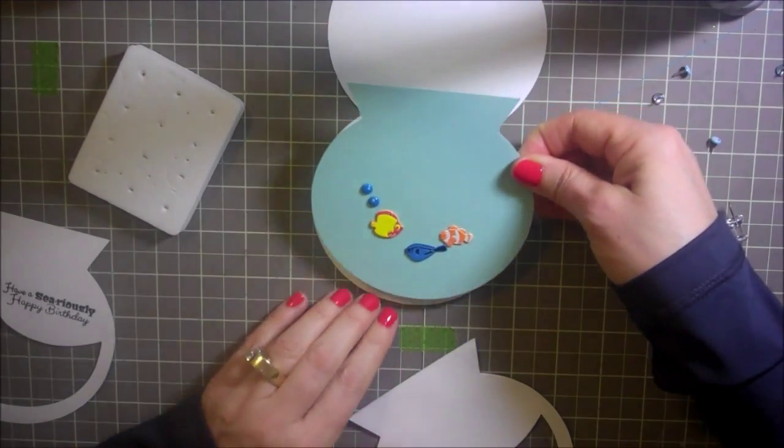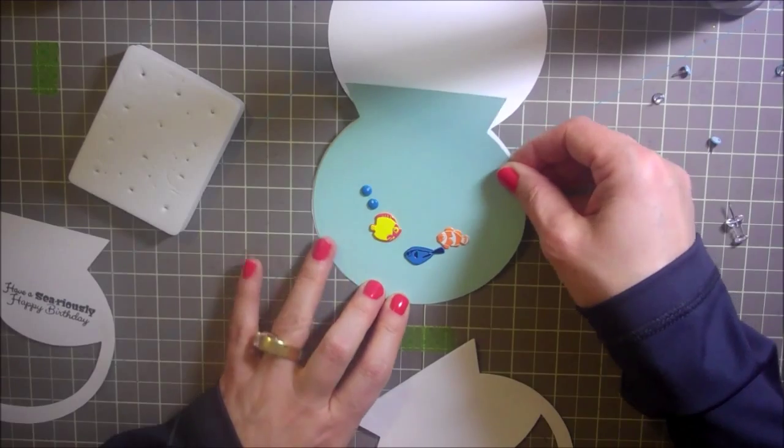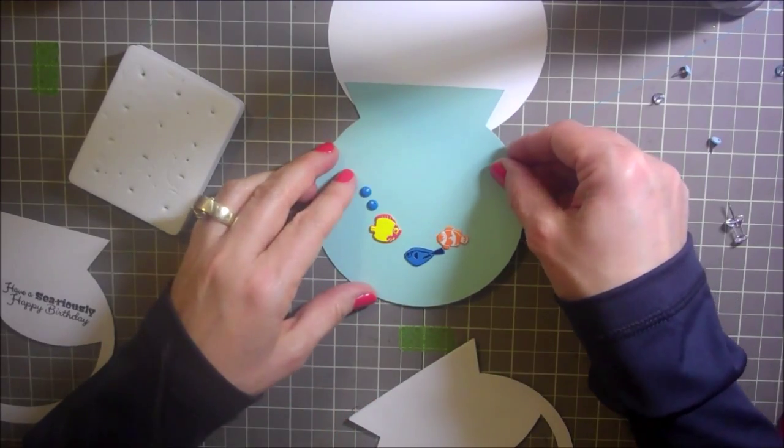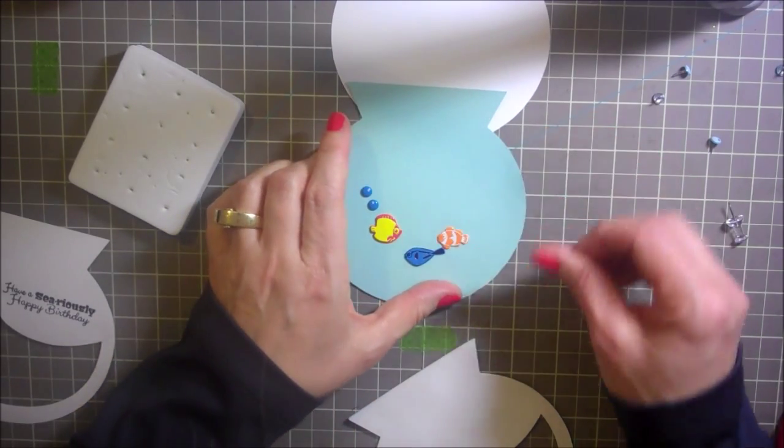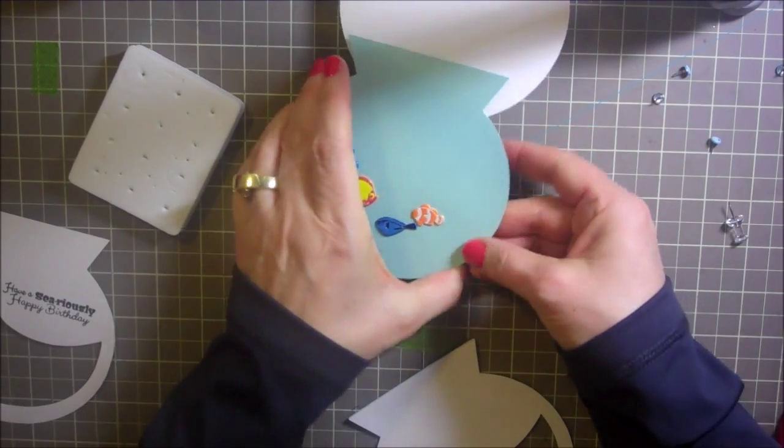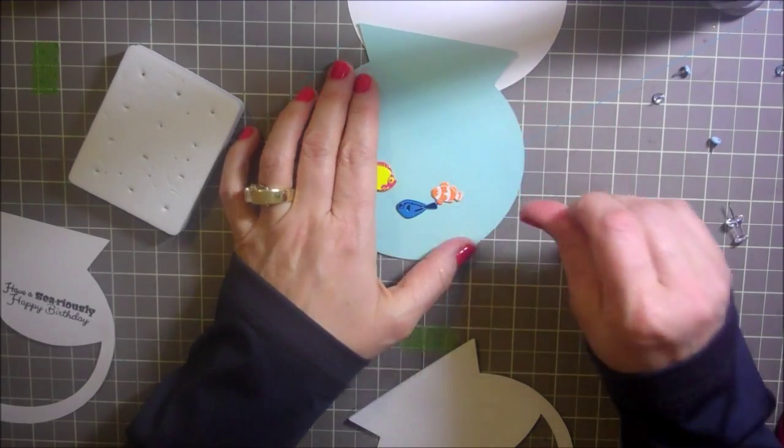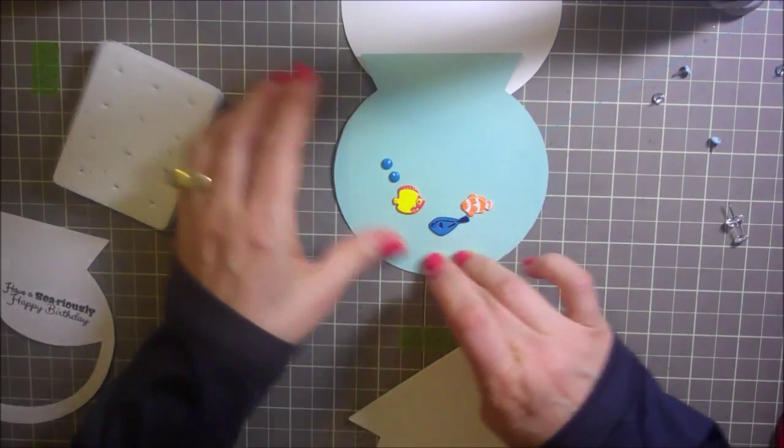So I'm just going to add this right here to the bottom of my card. Try to keep this straight up. Alright. Now I'm going to lift my card and center this a little bit more.